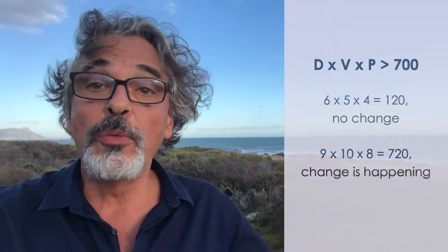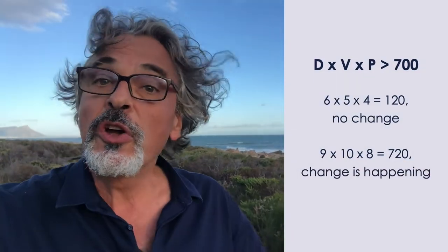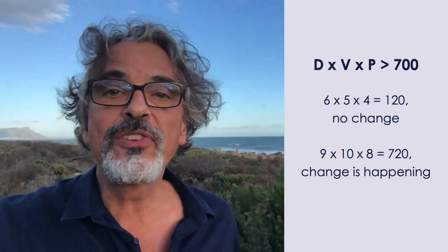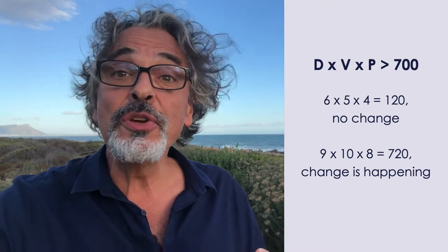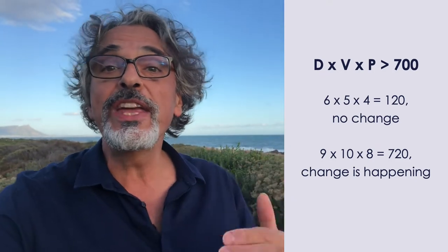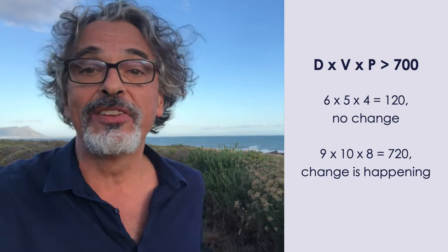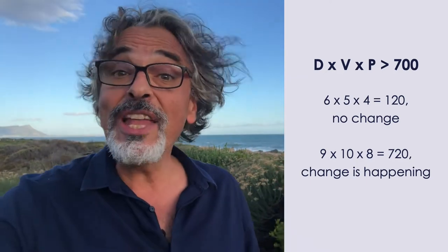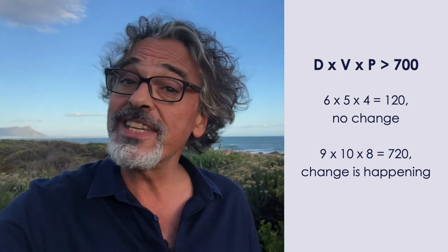Now that you've scored your DVP, you multiply the three scores and compare the DVP score to your resistance to change. If it is less, now you understand why — even as you and your followers are dissatisfied — you are not doing anything about it, or are even actively resisting change.